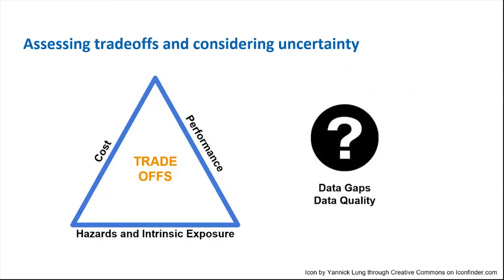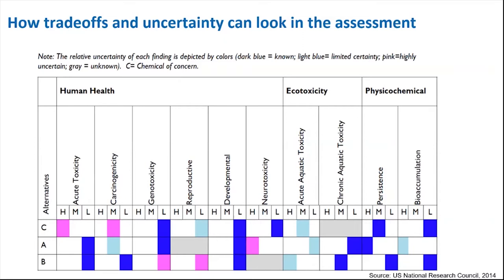As we've mentioned throughout this training, it's important to anticipate that when assessing alternatives, tradeoffs are likely to occur — whether between hazard endpoints, or between hazard and performance, or performance and cost. Uncertainty is also an overlapping factor when integrating data to select preferred alternatives. We've provided a chapter from the U.S. National Research Council's report, A Framework to Guide the Selection of Safer Chemicals, on the topic of integrating information from the assessment, considering tradeoffs and uncertainty. This slide presents a matrix of a hypothetical hazard assessment comparing alternatives A and B against the chemical of concern, associated with six human health endpoints, two ecotoxicity endpoints, and two physiochemical hazard endpoints.